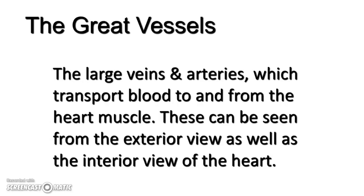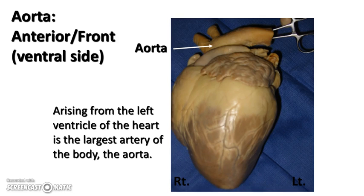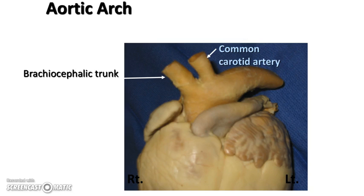The great vessels are the large vessels and veins visible on the exterior and interior of the heart. The first is the aorta, which arises from the left ventricle and is the largest artery of the body — most people start identification here because it's easily seen. The aorta has an arch with three tubes coming off it: the aorta itself, the brachiocephalic trunk, and the common carotid artery. The middle vessel off the arch is the left common carotid, supplying the neck and head with blood. The left subclavian artery supplies blood to the upper limbs.